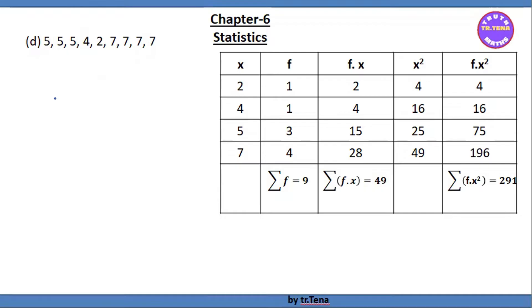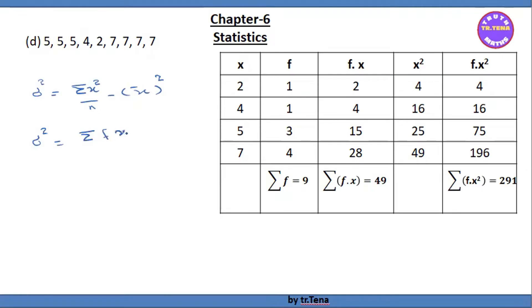In this formula, the variance is sigma square equals — we use sigma x square by n minus x bar, the whole square. We use the frequency formula: sigma square equals summation of fx square by summation of f, minus x bar the whole square.